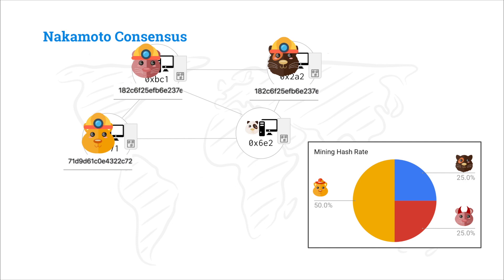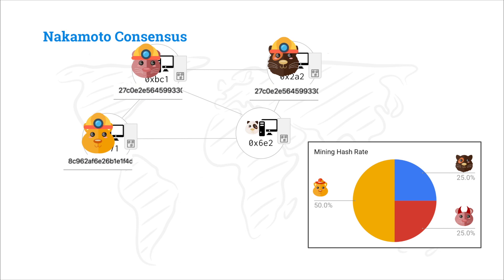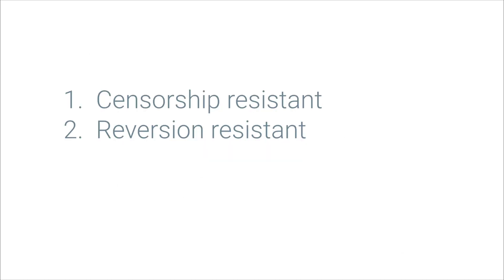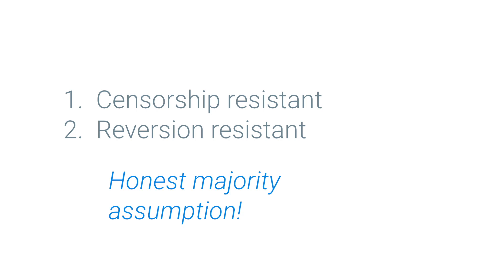We have this system where everyone's history is this chain of blocks with dependencies on one another, and miners are doing all of this computational work, computing hashes, competing to propose the next valid block. So this system is censorship resistant and reversion resistant, but only if we assume that there's an honest majority of CPU power.